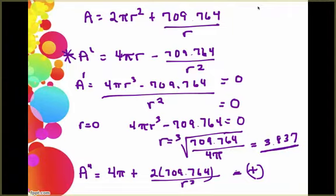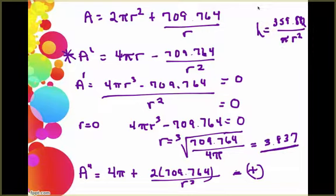I also need to find the height, but if I go back to my original problem, remember that we had that the height was 354.882 divided by pi r squared. So if we substitute in our value for r, we're going to get that our height would then be 7.674 centimeters. And there would be my two dimensions that I need to minimize my surface area.